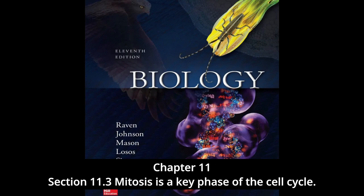In animal cell mitosis, the centrioles extend a radial array of microtubules toward the plasma membrane when they reach the poles of the cell; this arrangement is called an aster. Although the aster's function is not fully understood, it probably braces the centrioles against the membrane and stiffens the point of microtubular attachment during retraction of the spindle. Plant cells, which have rigid cell walls, do not form asters.